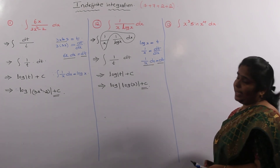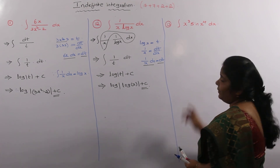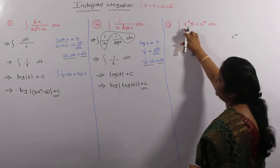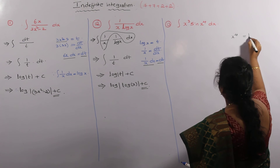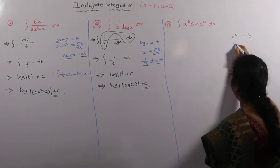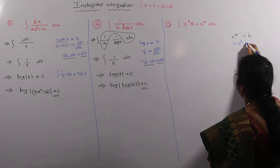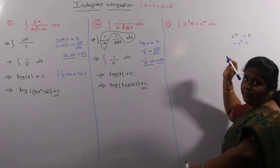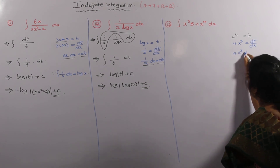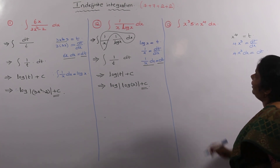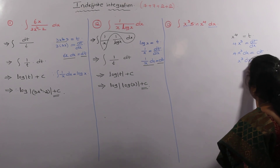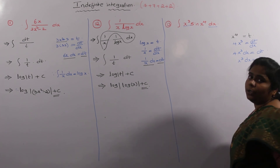Next problem: integral of x³ · sin(x⁴) dx. What we have: differentiation part is taken as T. Differentiation of x⁴ is 4x³ (using the formula x^N → N·x^(N-1)). So x⁴ is taken as T, and dT/dx = 4x³, which means 4x³ dx = dT. But we need only x³ dx, so transferring the 4: x³ dx = dT/4.